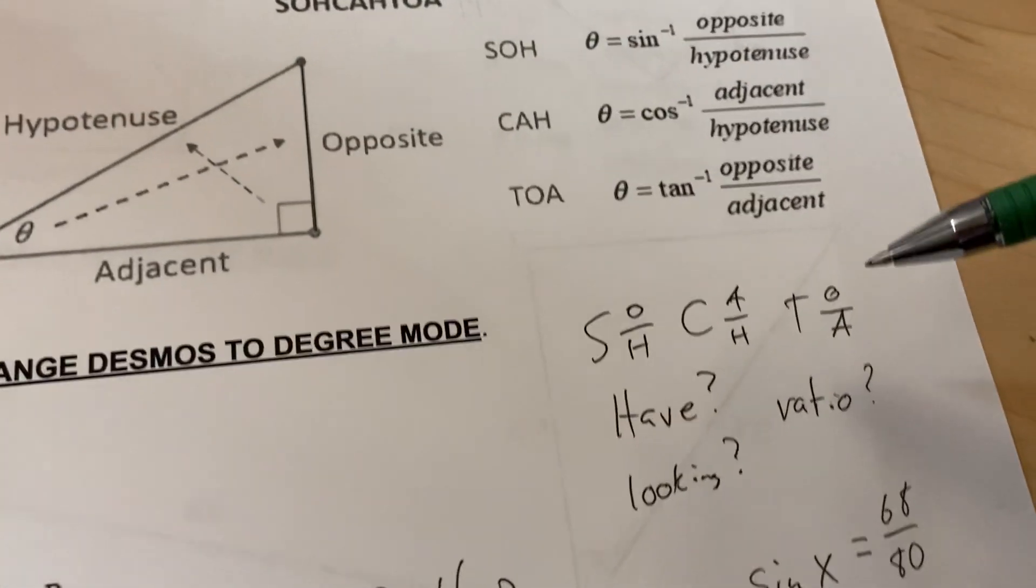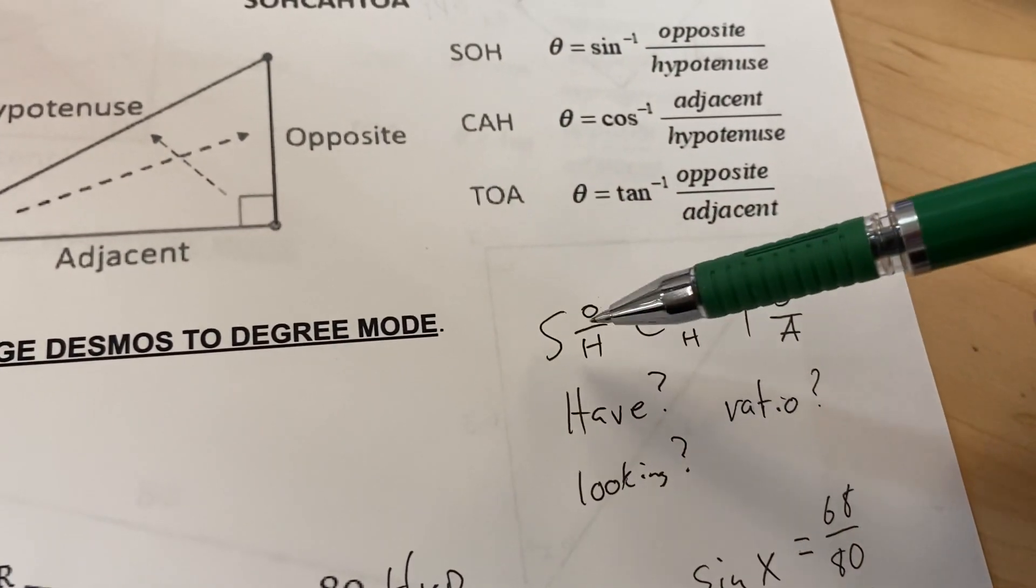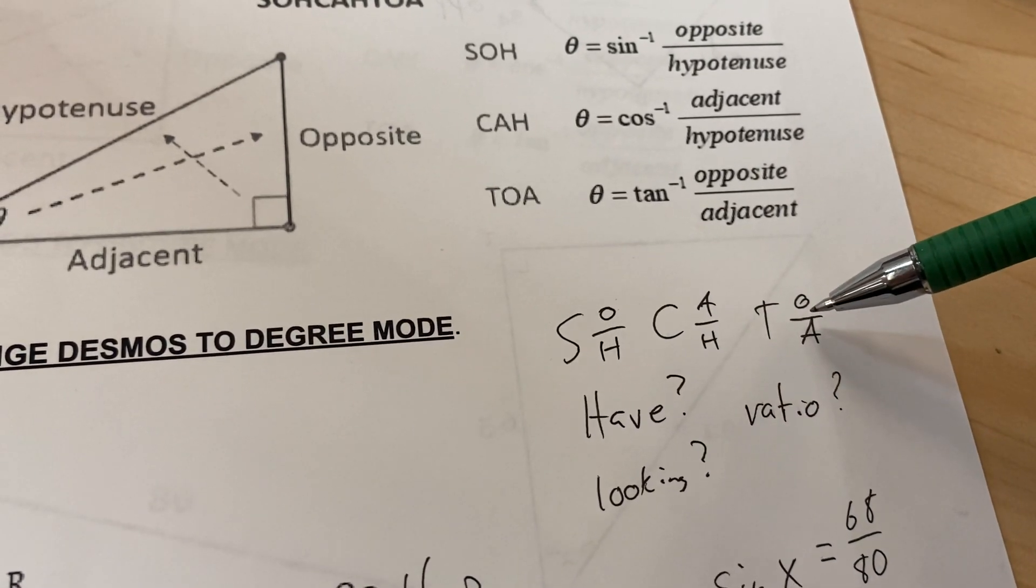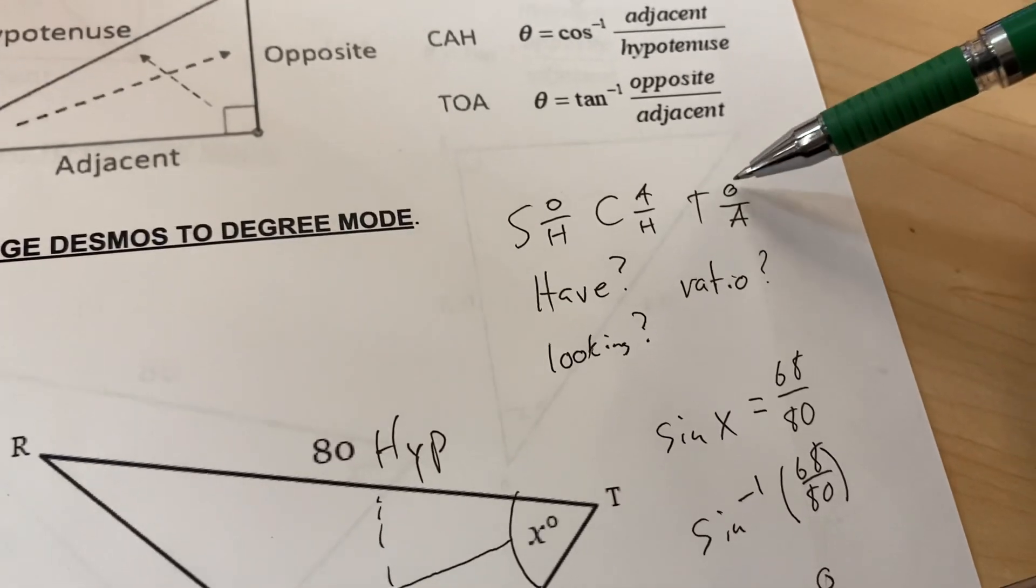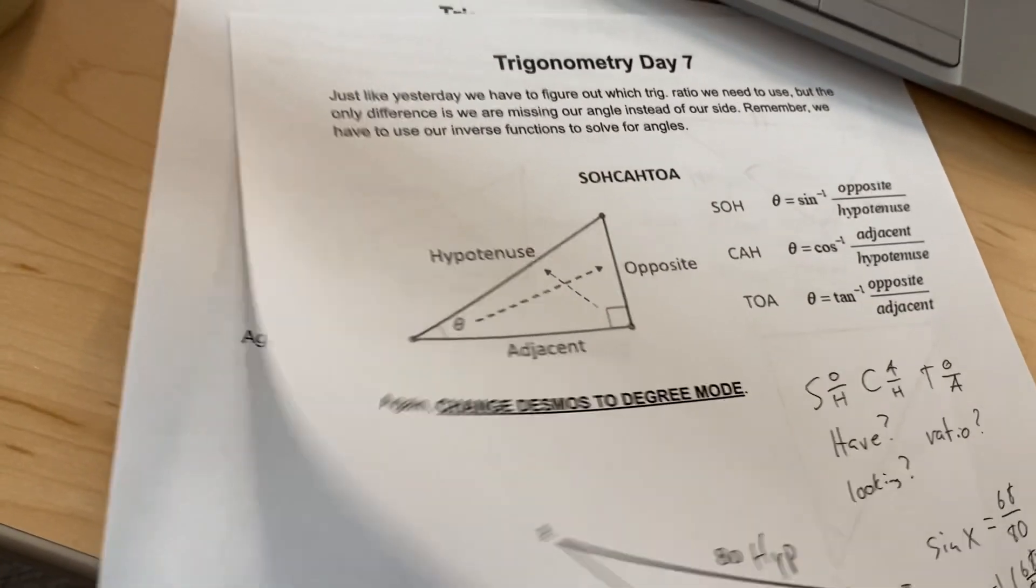then looking at my options here, opposite is either sine or tangent, and adjacent is either cosine or tangent. Since we have opposite and adjacent both, I need it to be tangent.